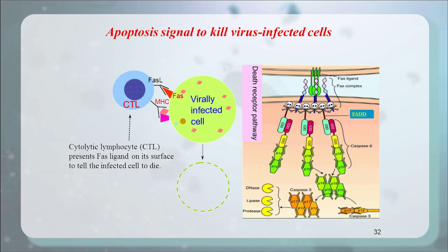From the above, we know apoptosis is definitely essential for normal development and the maintenance of homeostasis. But if apoptosis is out of control, what will happen? Please think about it.